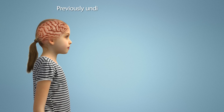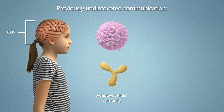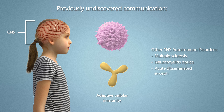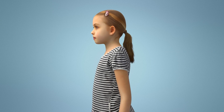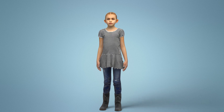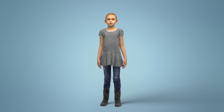The findings from mouse studies indicate that there is previously undiscovered communication between the CNS and adaptive cellular immunity to infections. This may help lead to understanding how many other CNS autoimmune disorders develop, such as multiple sclerosis, neuromyelitis optica, acute-disseminated encephalomyelitis, and NMDAR encephalitis. Additionally, these findings support the need for early identification of BGE cases and the critical role of immune-modulating therapies in treating these disorders.